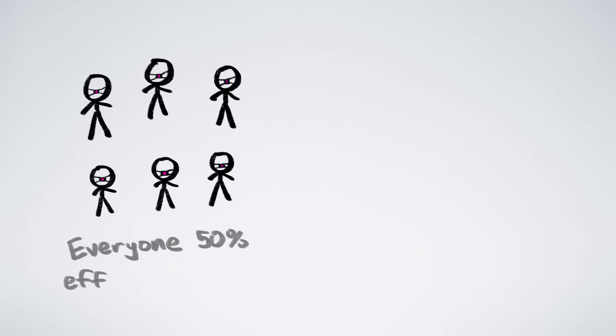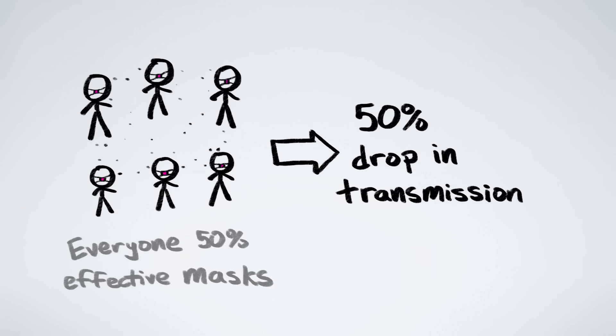And you might assume that if everyone wears a 50% effective mask, there'd be a 50% benefit. That is, a 50% drop in disease transmission. But that's not how the math of masks works. When everyone wears a 50% effective mask, disease transmission actually drops by 75%, much better than 50%.